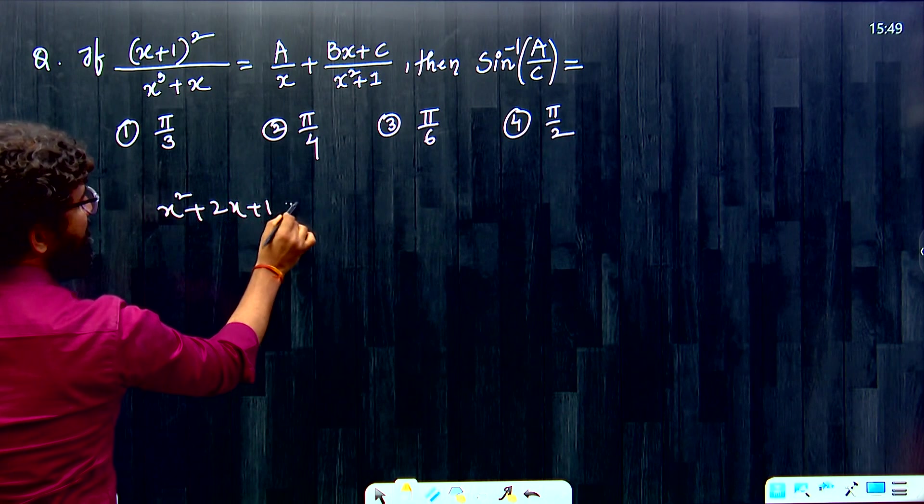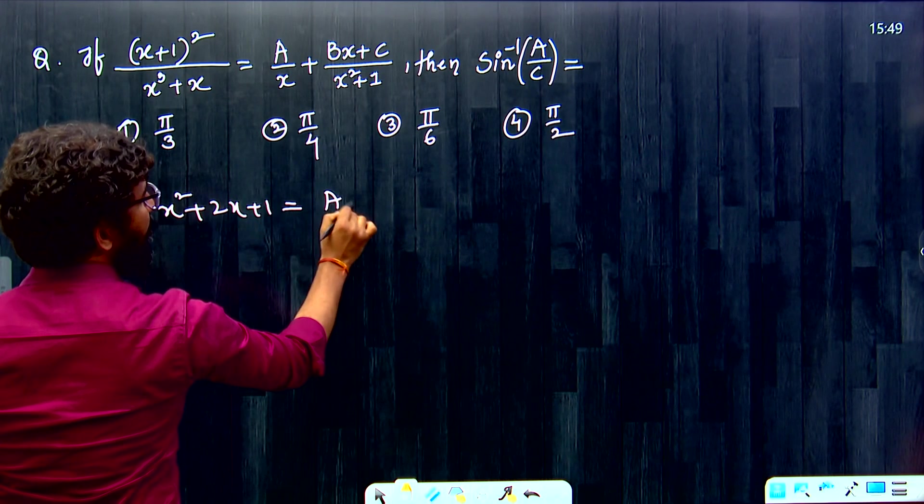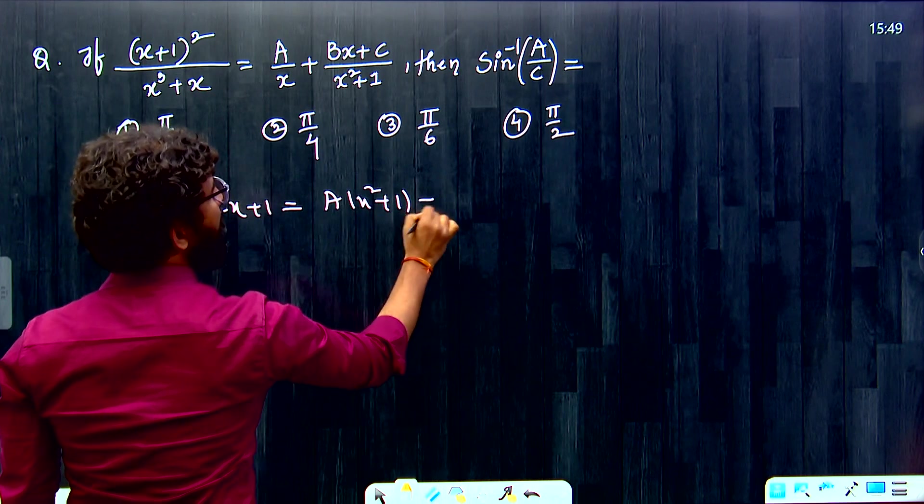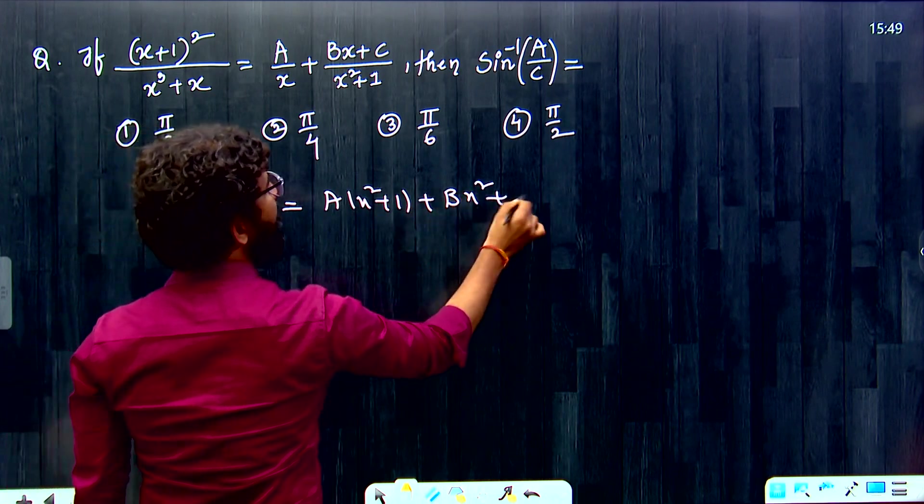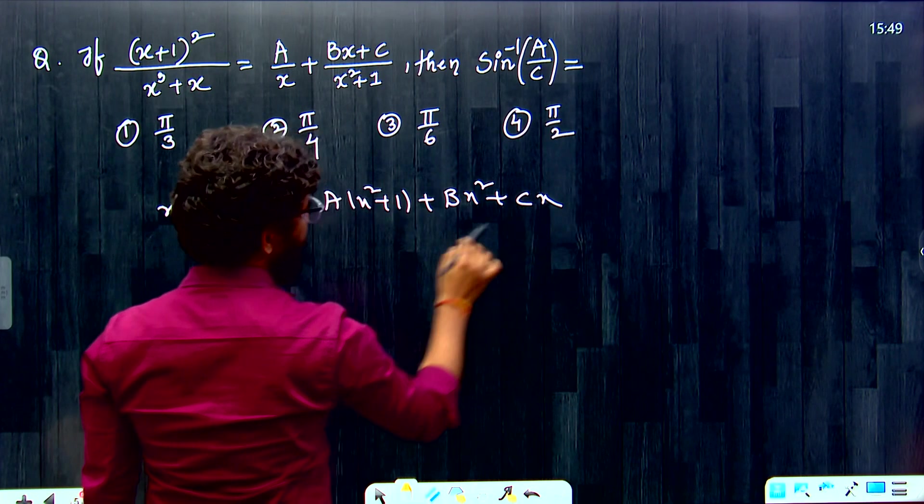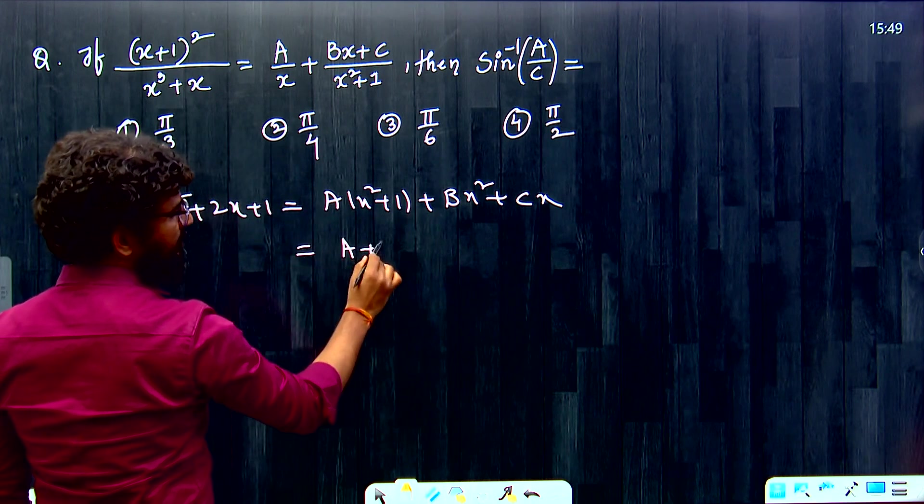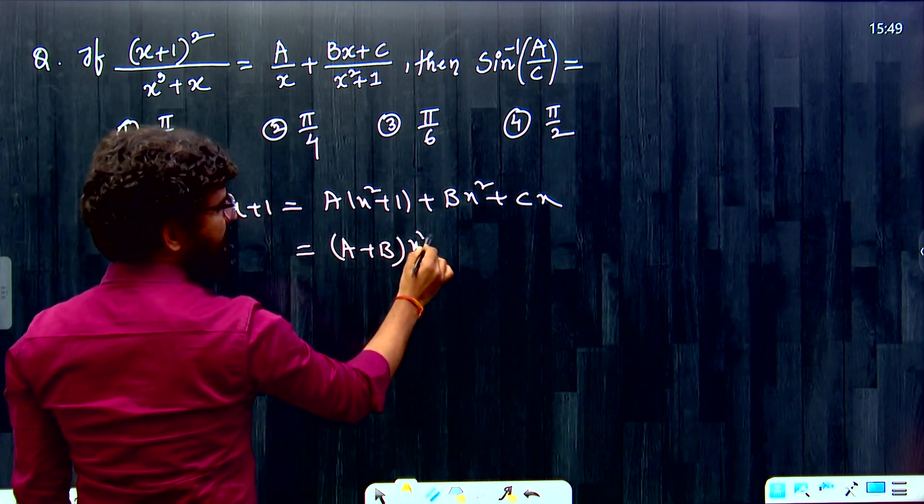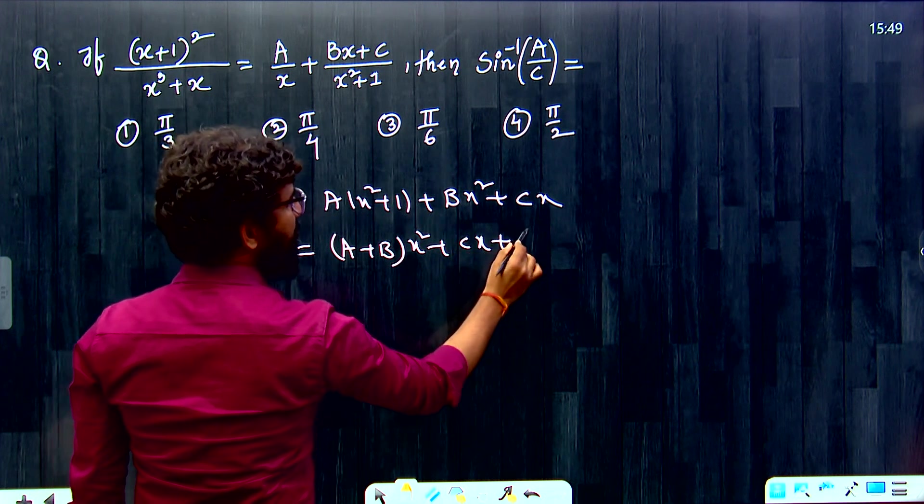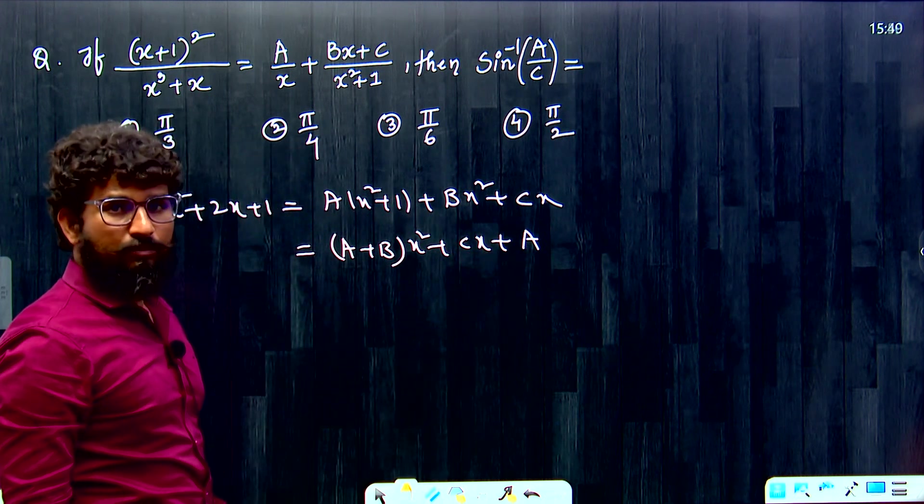X square plus 2X plus 1 is equal to A of X square plus 1 plus BX square plus BX square plus BX square plus CX. And here common. A plus B into X square plus CX plus E.